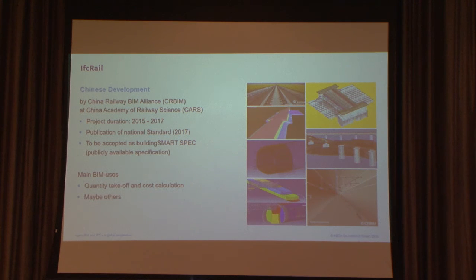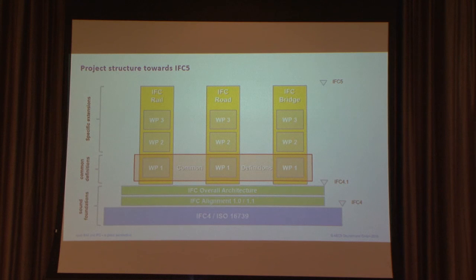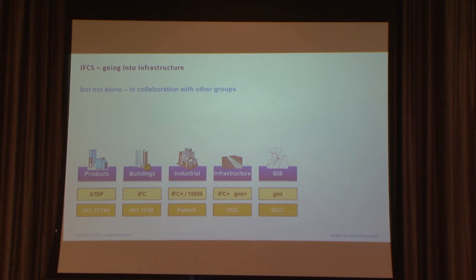One of the big challenges is integrating these three initiatives — road, rail, and bridge — which are slightly different, into a common project. There's now a schedule toward 2018 to integrate them into a harmonized common definition and then build the various extensions. For this, we definitely have to work with other industries and bodies. When talking about infrastructure, you have to talk about GIS standards from OGC, since infrastructure relates a great deal to GIS. In parallel today, there is actually a London joint conference between Building Smart and OGC specifically on this topic, and the development should hopefully be finished by 2018.